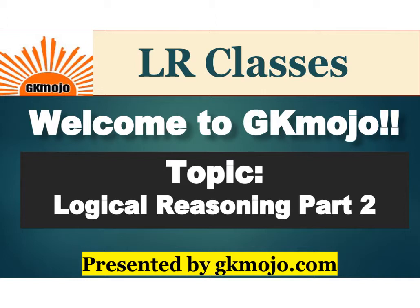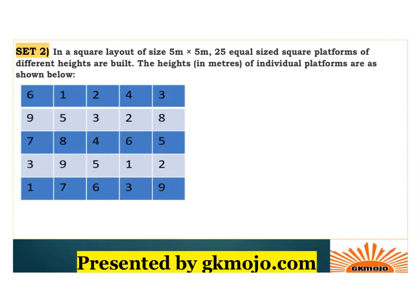Basically, in a square layout of five by five, there are 25 equal-sized square platforms built of different heights. The heights of the individual platforms are as shown — six, one, two, four, three and so on. These are the heights of the platforms that are built, and there are 25 such boxes or squares of equal size. Let us see what all points are given ahead.